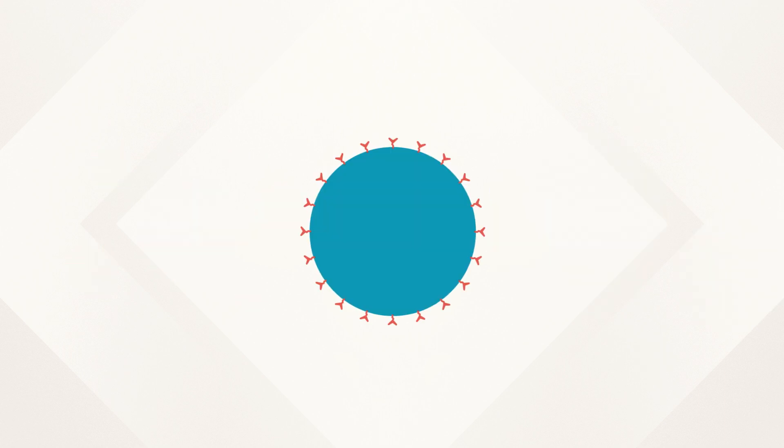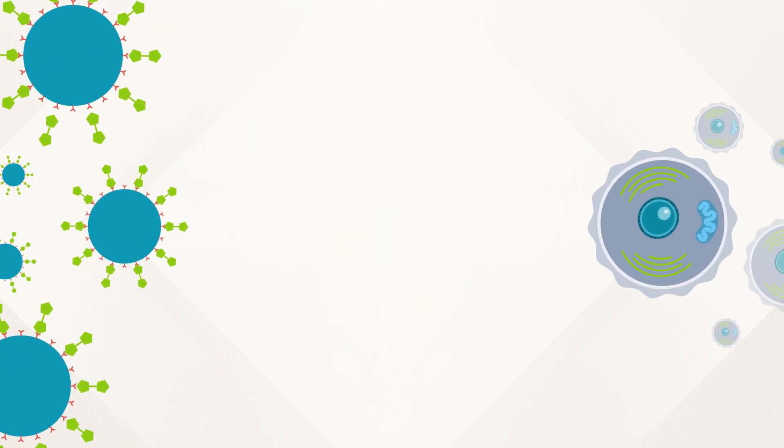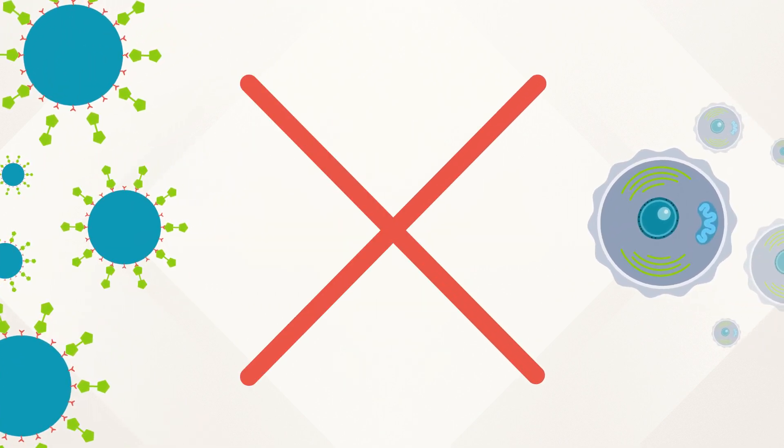When the pandemic hit, scientists already knew that if a person has antibodies that recognize this spike protein, this could stop the virus from infecting them.